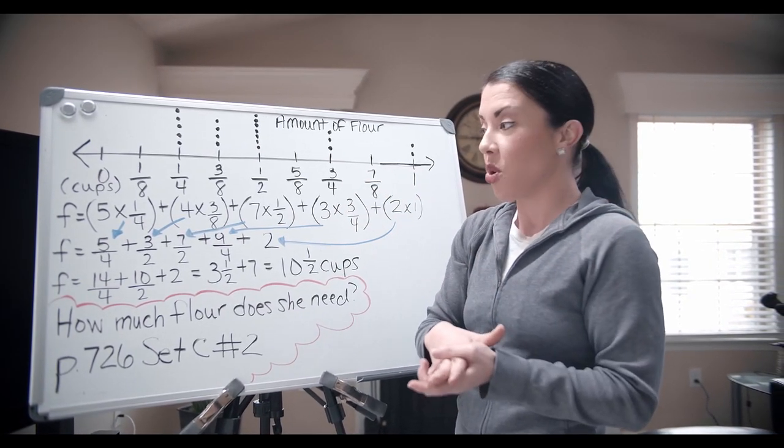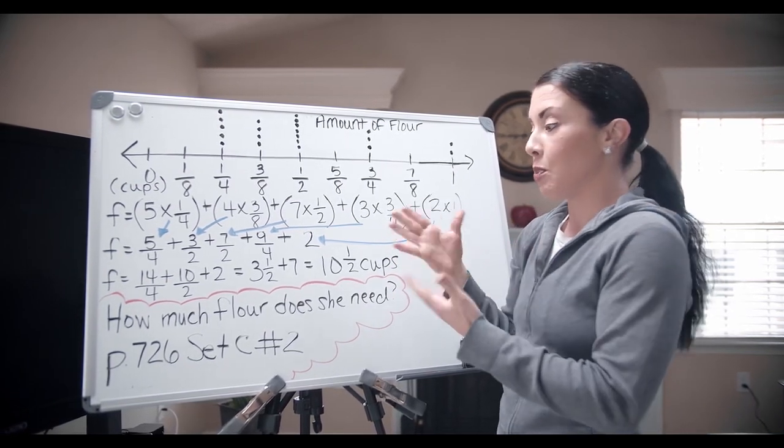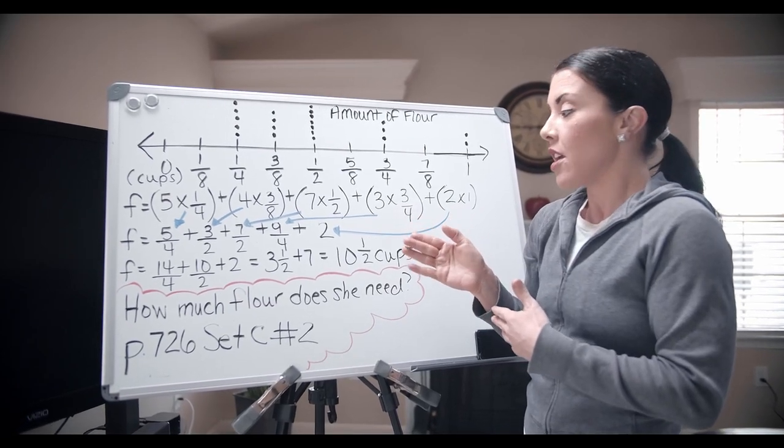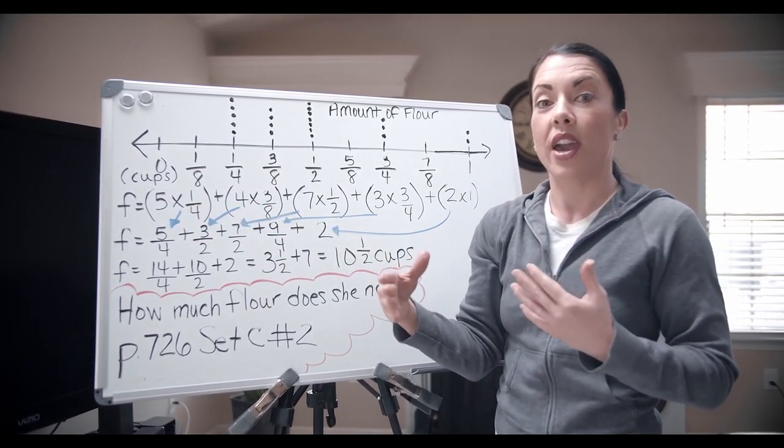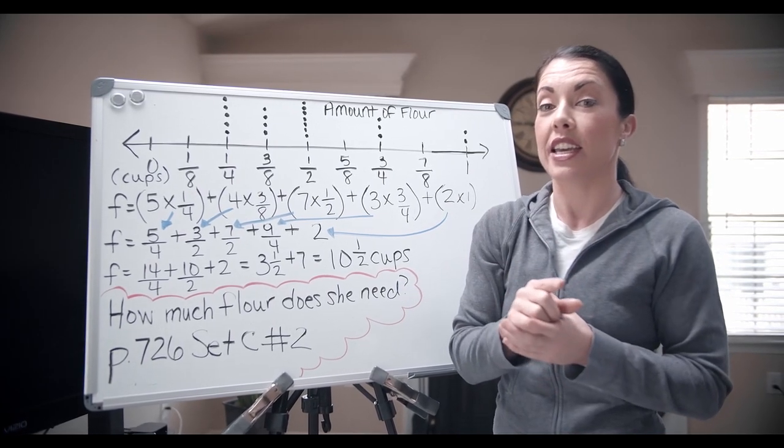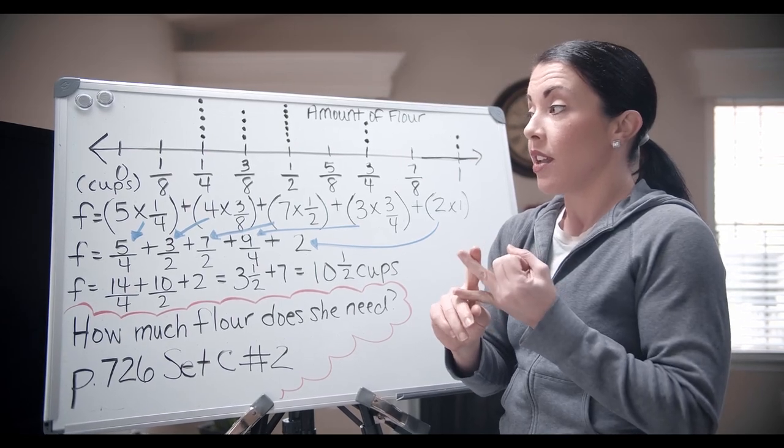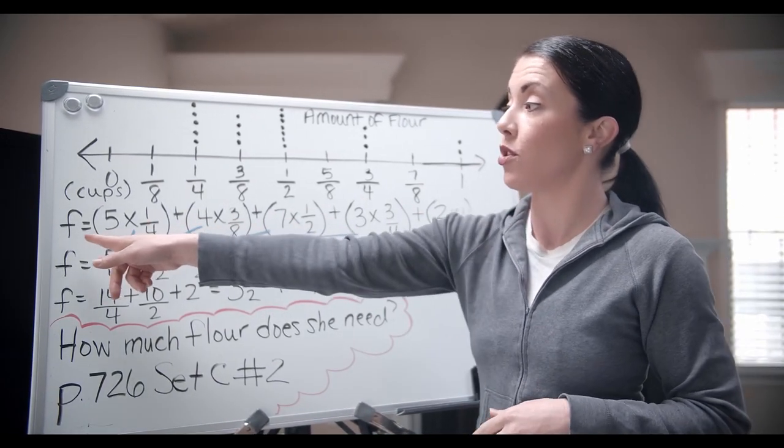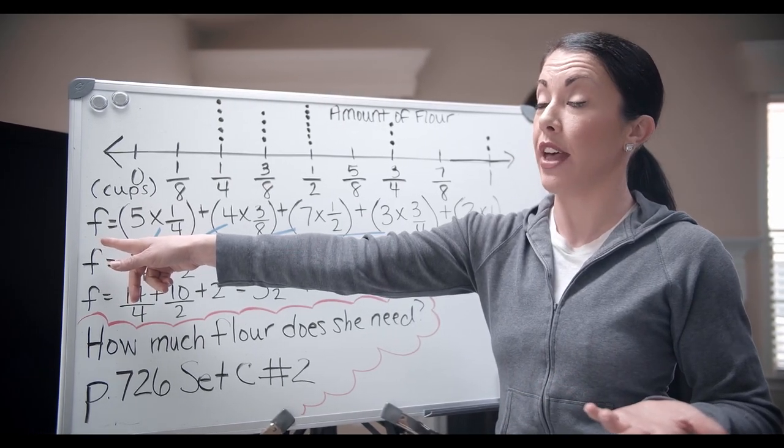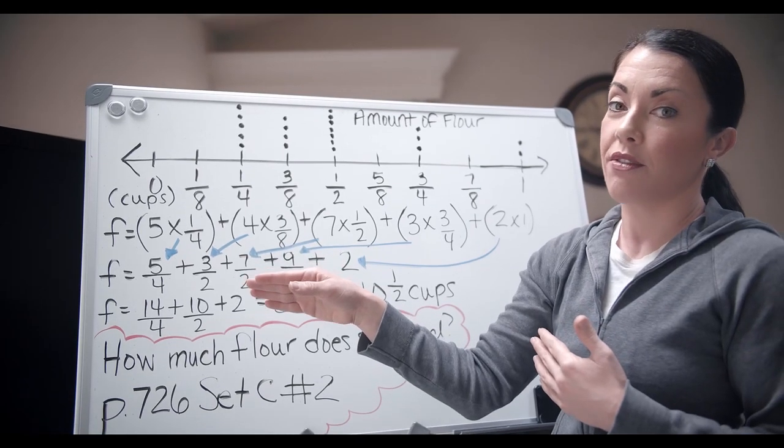So let's get started. This question asks us to find the amount of cups that this person needs. So what I did was I went ahead and I made my equation. Remember an equation has a couple of things. A variable, numbers, and operations. So I went ahead and took my variable f to stand for flower. And then I went ahead and started putting in my information.